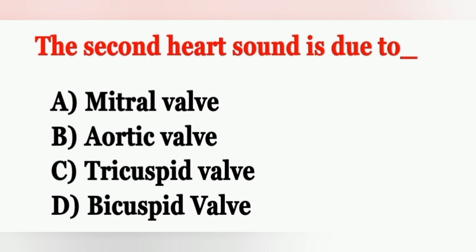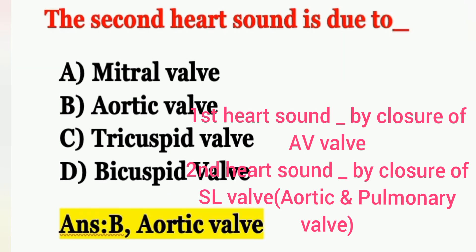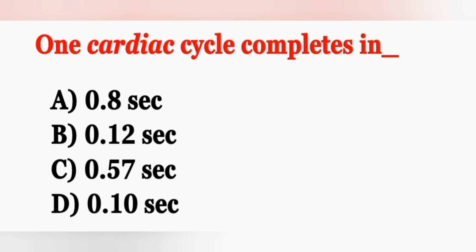Next question: The second heart sound is due to — Option A: mitral valve, Option B: aortic valve, Option C: tricuspid valve, Option D: bicuspid valve. The correct answer is Option B, aortic valve. There are two heart sounds — lub and dub — heard by stethoscope. The first heart sound is produced by closure of the AV (atrioventricular) valve, and the second heart sound is produced by closure of the SL (semilunar) valve, which includes the aortic and pulmonary valves. Since aortic valve is in the option, Option B is correct.